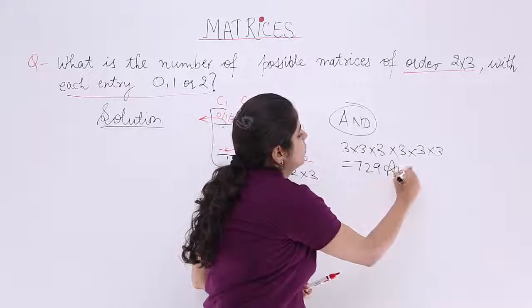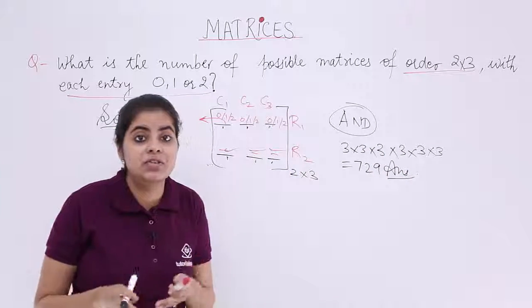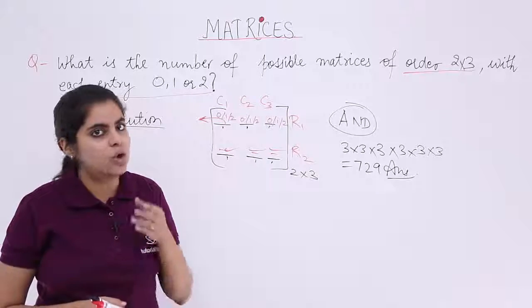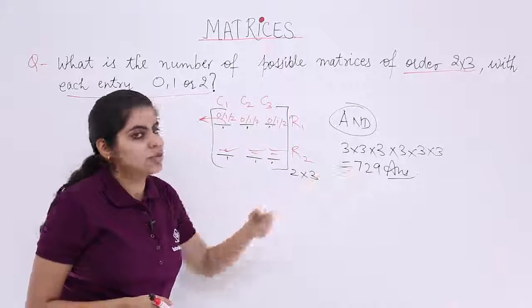So my answer for the number of possible matrices of order 2 by 3 with each entry 0 or 1 or 2 is 729.